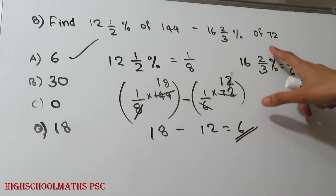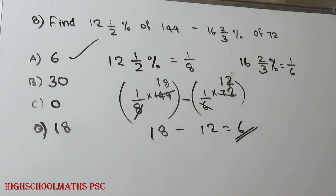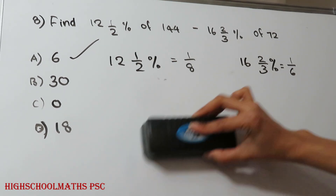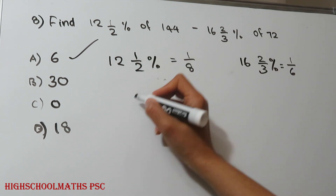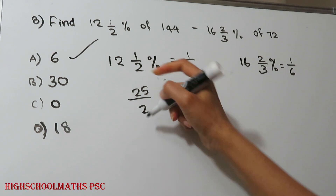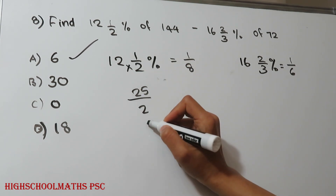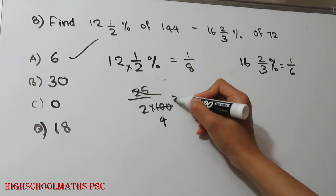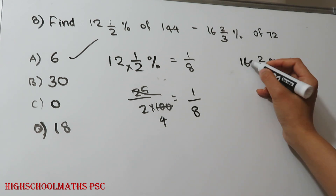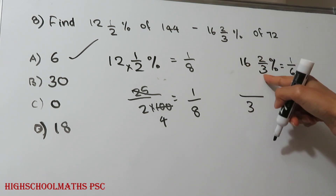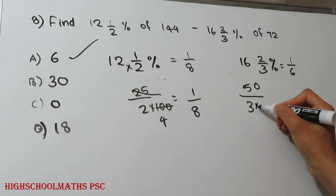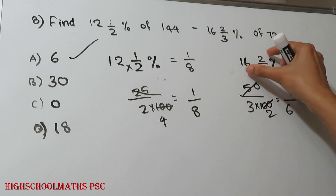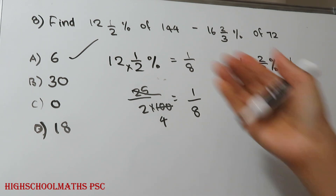The calculation gives us 18 minus 12, which equals 6. If we take 5% in the percentage, we get 60. Using 25 divided by 4 equals 0.25, and 1 by 4 equals 0.25. With 16 times 3, you have 100. If you have 100, you get 1 by 6. The answer is the same.